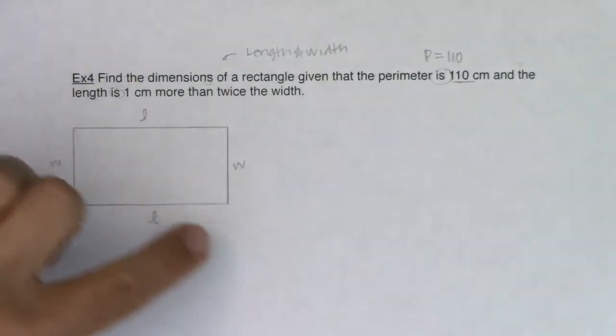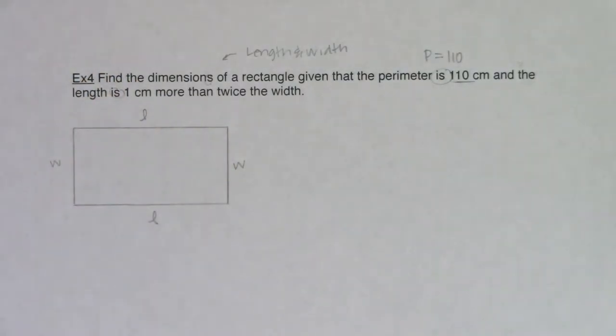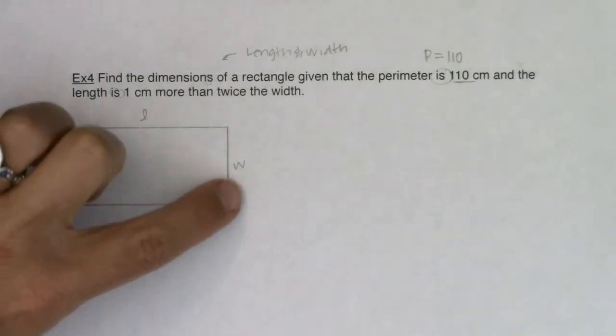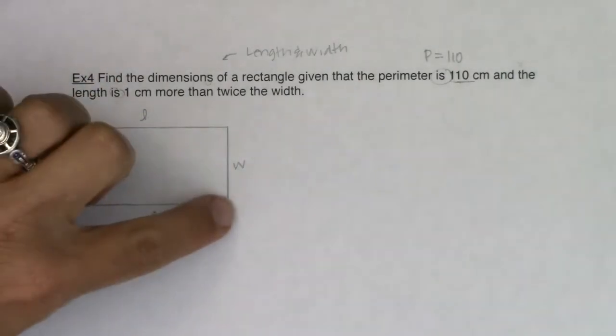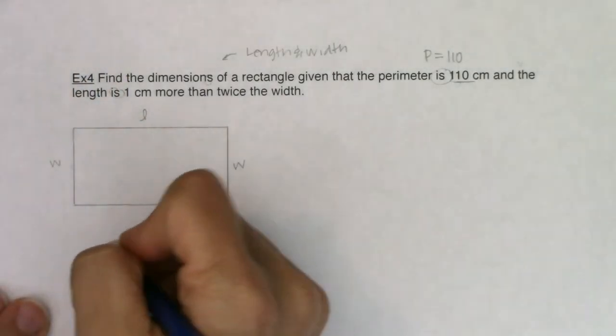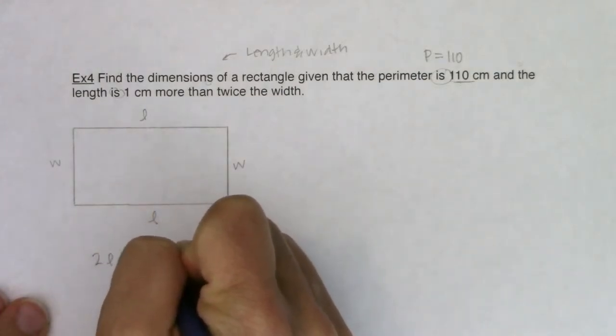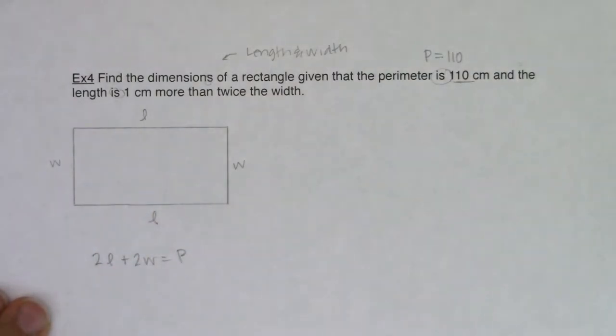And perimeter means add up the distance around your rectangle. So if I go through here, this is L, W, L, and W. So L plus W plus L plus W. Or a more succinct way of saying that is I have two lengths plus two widths, and that will always be equal to my perimeter.